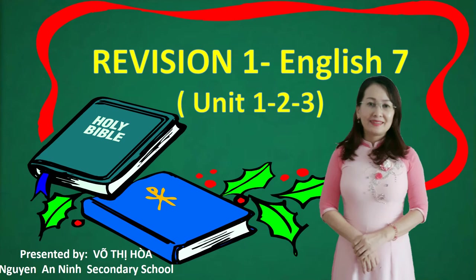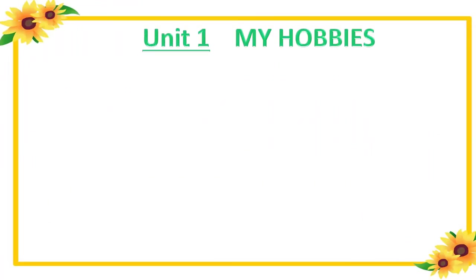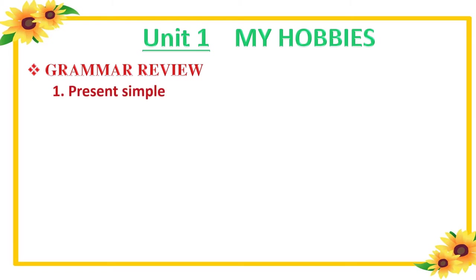Hello students, welcome to my lesson: Revision 1, English Grade 7, Units 1, 2, and 3. In this lesson you will review grammar that you have learned in Units 1, 2, and 3. Now let's start the lesson. Unit 1: My Hobbies — Grammar Review. In Unit 1 you will review three grammar points.